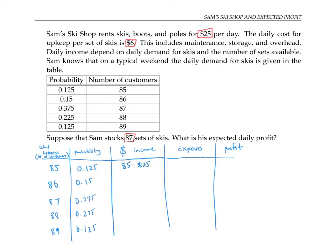His expenses, however, will be for all 87 sets of skis. Even if he doesn't rent them, he still has to store them, maintain them, and has the overhead for them. So his expenses are going to be 87 times that $6.